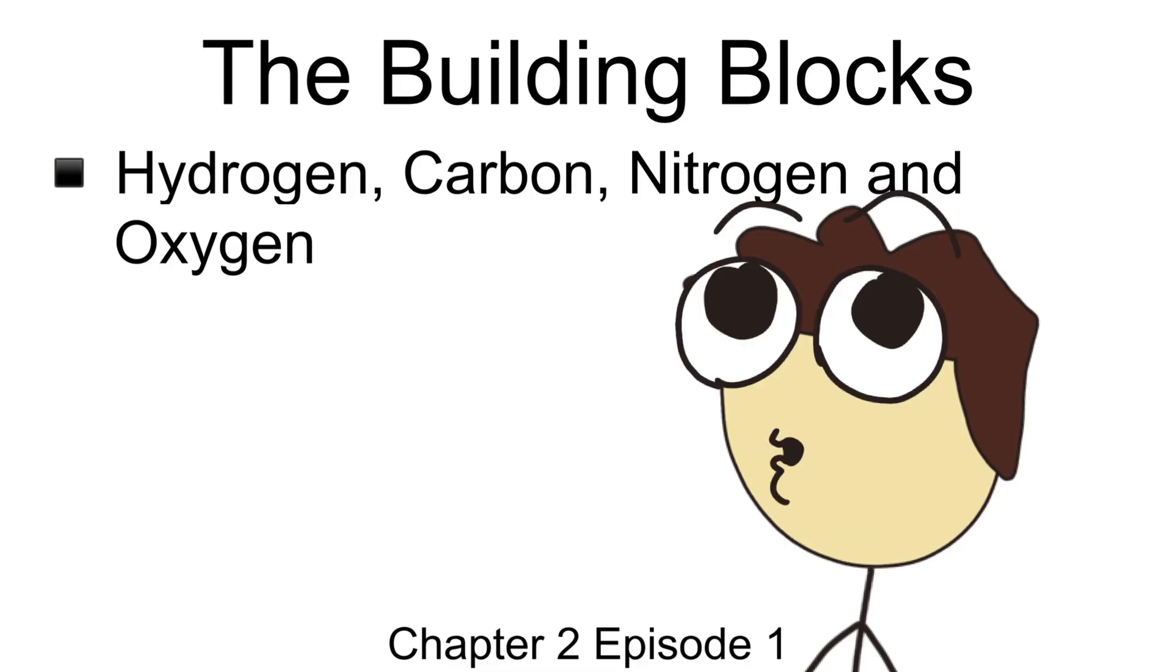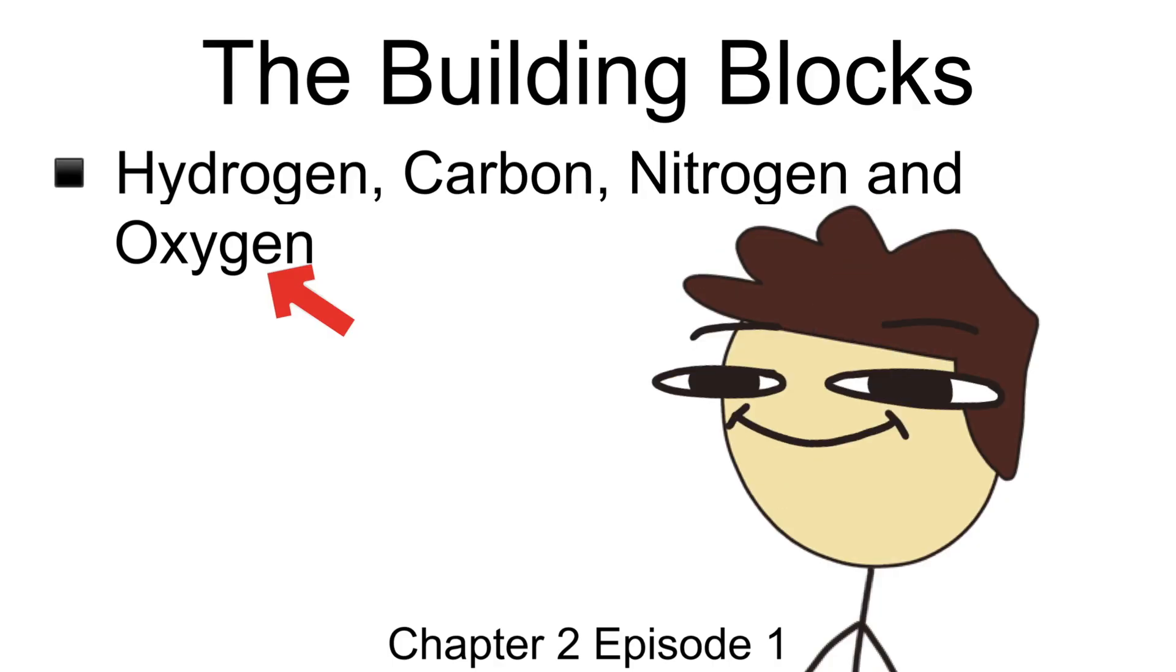There are four types of atoms that make up 96% of all organisms and those are hydrogen, carbon, nitrogen, and oxygen. Today, a living organism is composed of millions of chains of these atoms that make up who we are.